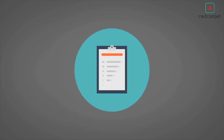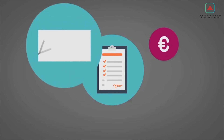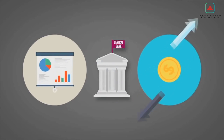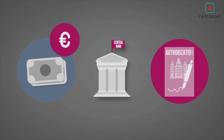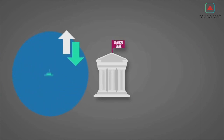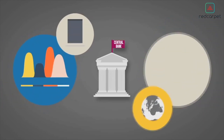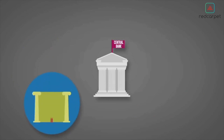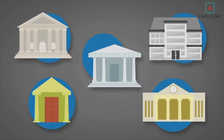Central banks oversee monetary policy to achieve goals such as currency stability, low inflation, and full employment. They determine interest rates, influence money supply, issue currency, and grant authorization to establish banks. Central banks also impose capital requirements, place reserve requirements to ensure liquidity, shape lending policies through margin requirements, and act as lender of last resort. Several types of banks exist to meet different consumer needs.